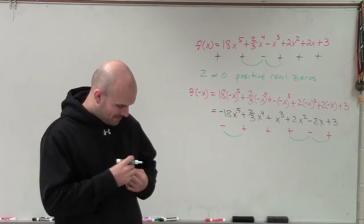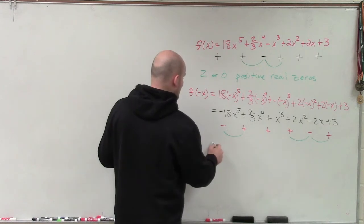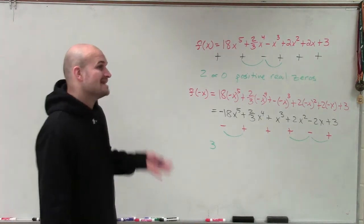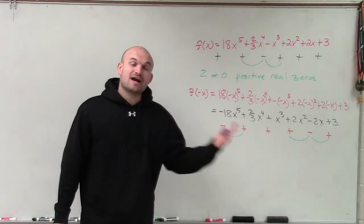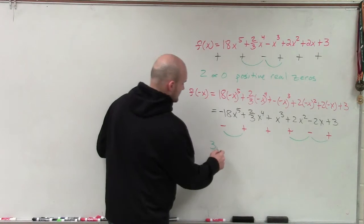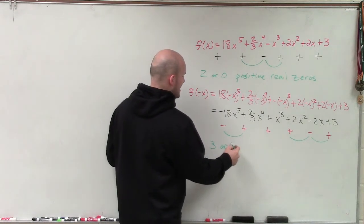Sorry about that. So by going by our rule of the change in signs, you can see now I have three possible real zeros, or minus an even number. Well, again, I can subtract two, but I cannot subtract four, because you can't have a negative number of zeros. So I could have three, or by subtracting two, I have one. So three or one negative real zeros.